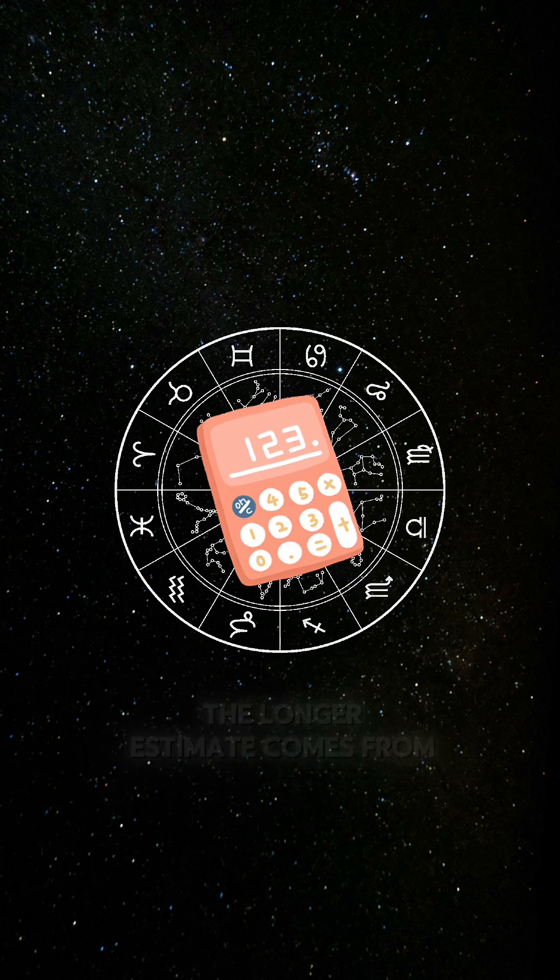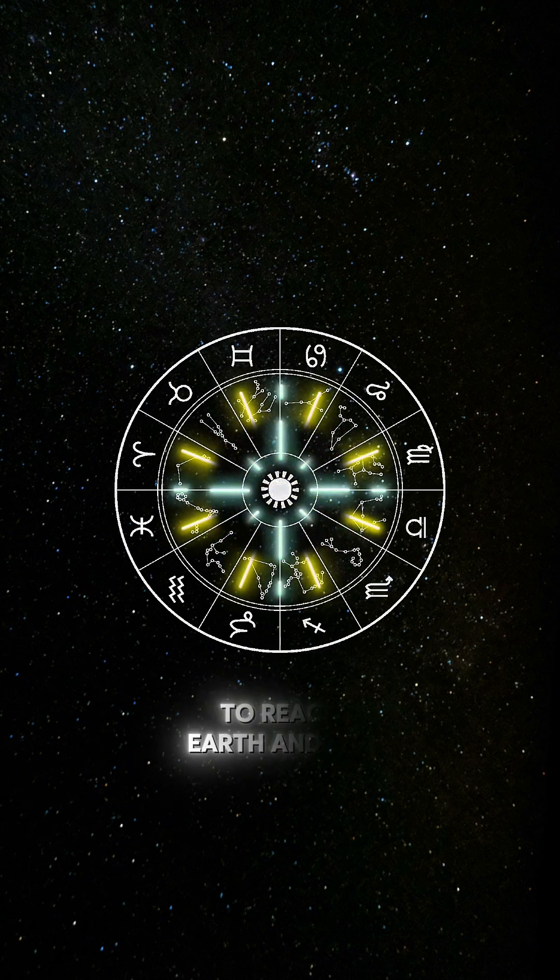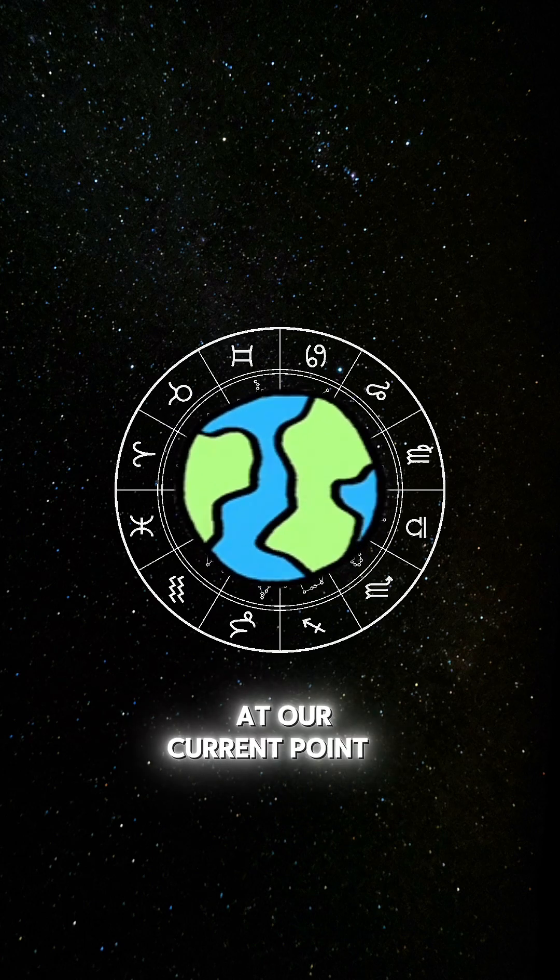The longer estimate comes from modern calculations based on the time it takes light from Sirius to reach Earth and the apparent rate of Earth's wobble at our current point in the cycle.